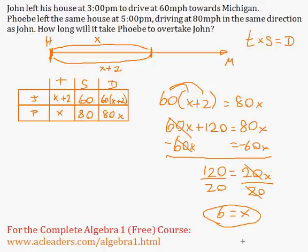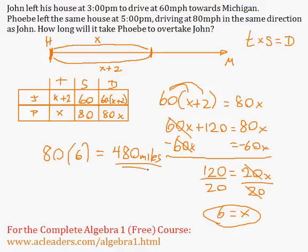And what if the question was different? What if they asked how far away from their house would Phoebe overtake John? That would be simple, because we would just need to determine the distance. And distance is 80x. So 80 times 6 would be 480 miles away from the house where they left from, towards Michigan. That's it.